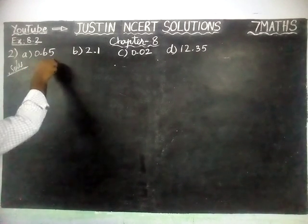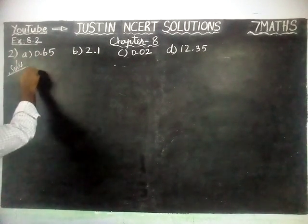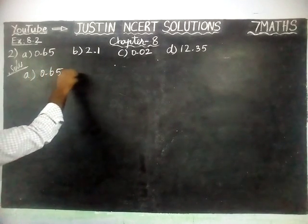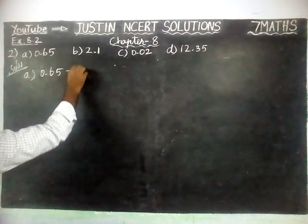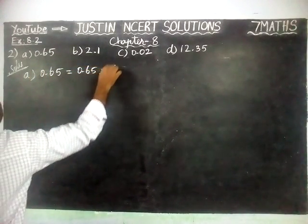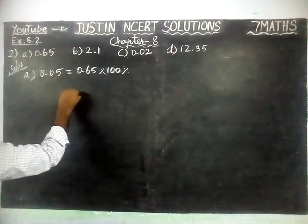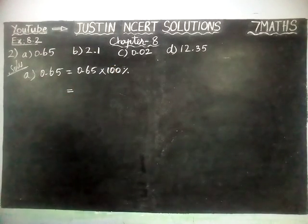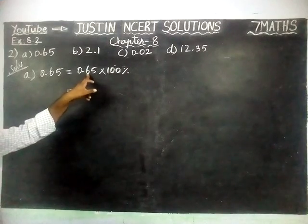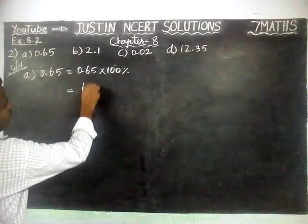Part A: 0.65. Here, 0.65 is given and we are going to convert it. 0.65 is equal to 0.65 into 100%. Now, we are going to multiply 100 with 0.65. When we multiply 65 into 1, we will get 65.